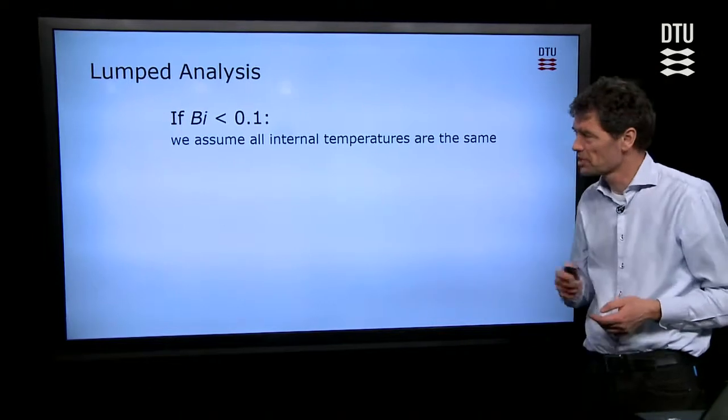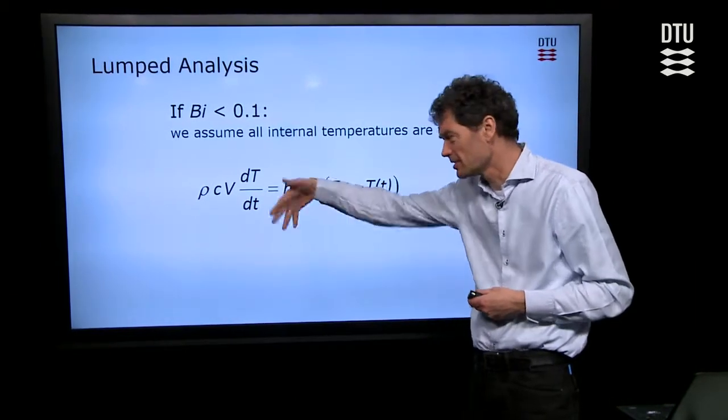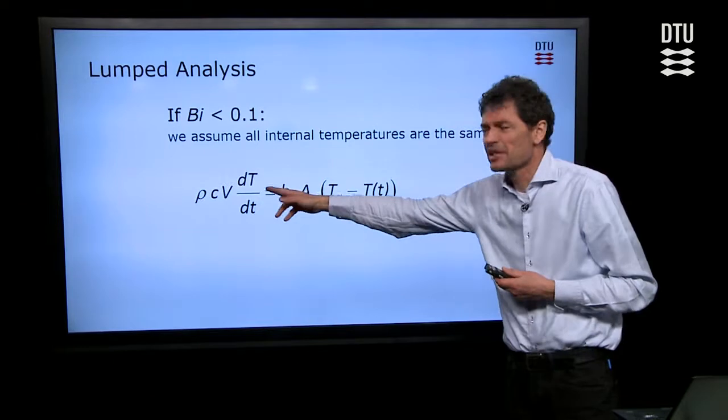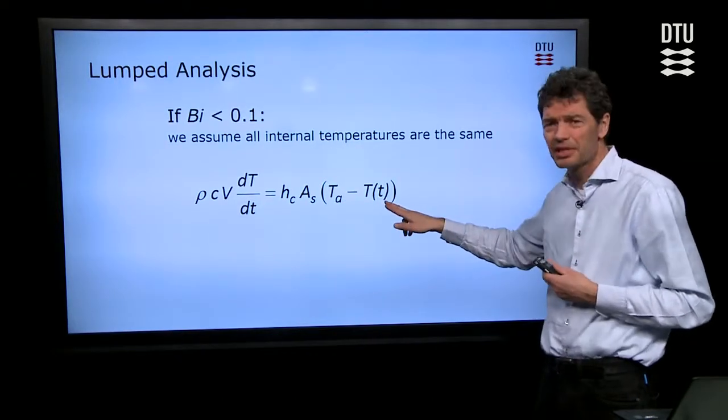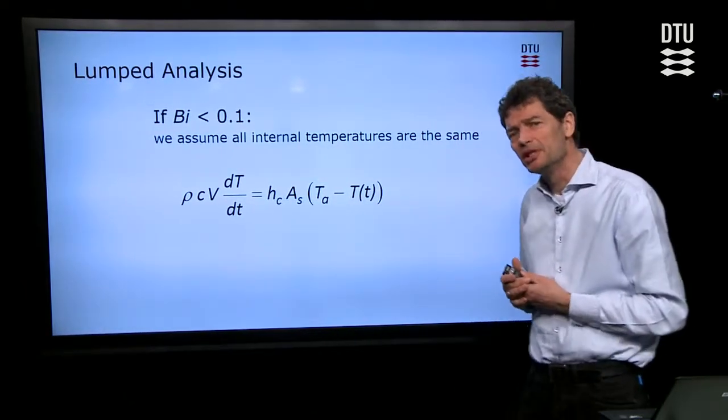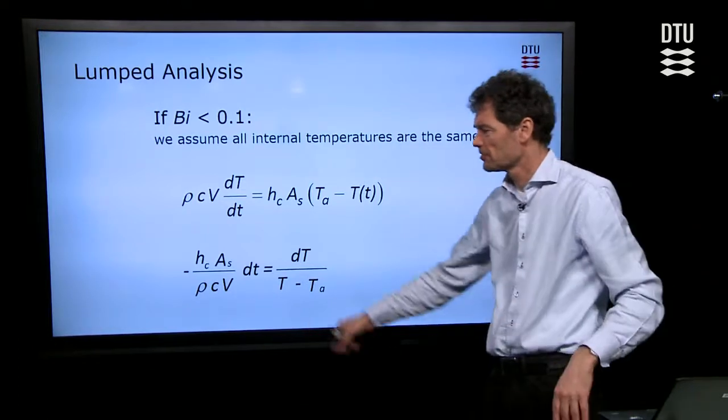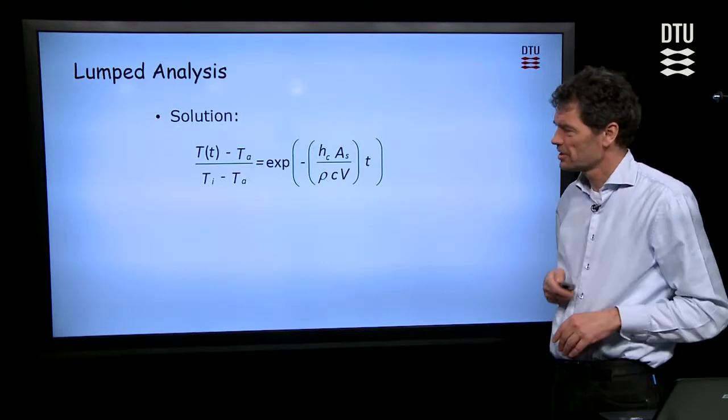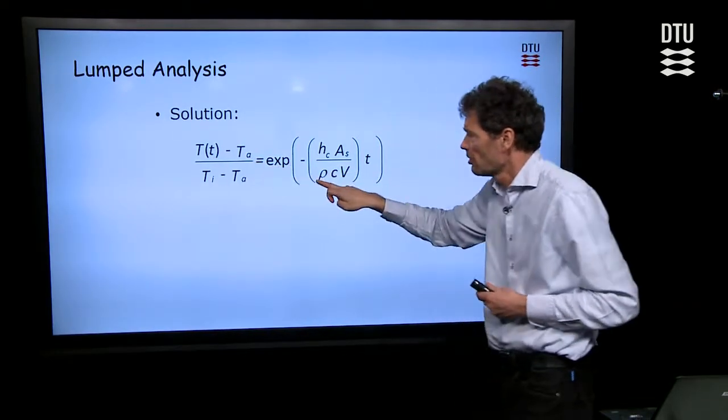In that case, we assume all internal temperatures to be the same, and we can follow how that temperature develops with time, taking into consideration the heat capacity. That comes as a temperature increase because of the heat flow from the ambient towards the material, where we must consider the heat transfer coefficient and surface area. That's a small differential equation. We can shift it so we have time dependencies here, temperature dependencies on either side of the equation sign. Very simple differential equation.